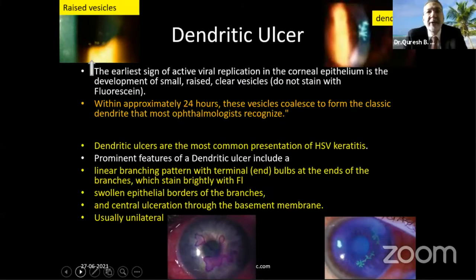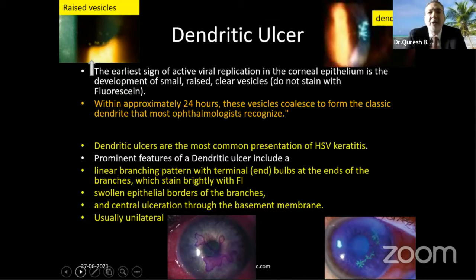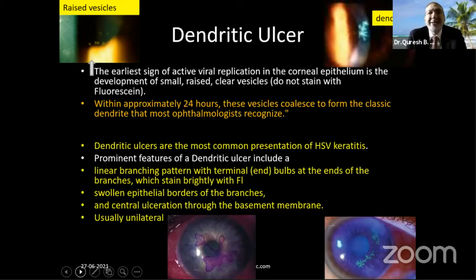The dendritic ulcer is the earliest sign of active viral replication in the corneal epithelium. What happens is you don't get an ulcer first — you get something like small, raised, clear vesicles which don't stain with fluorescein. But in approximately 24 hours, these vesicles coalesce and group together to form the classical dendrite that most of us recognize, which stains very well as you can see in the pictures. So dendritic ulcers are the most common presentation of HSV keratitis.